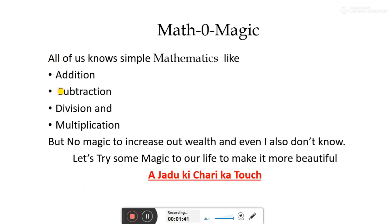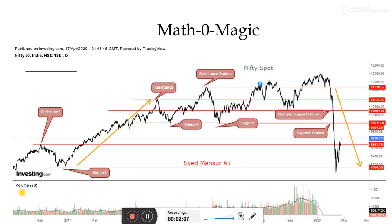In mathematics, we all know how to add, subtract, divide, and multiply. But we need some magic or more inputs to know how these numbers are coming and how they are affecting our stock market — the movement of price in stocks, equity, any index, forex chart, or any commodity. This is a chart of Nifty Spot — a line chart. I have marked resistance lines and support lines. There are multiple support lines and multiple resistance lines. Some resistance lines broken, market goes up.